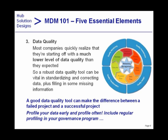Data quality is another essential element. People often start by thinking their data is pretty good — 80% quality or better — but when they start profiling and analysis, quality levels often drop. A robust data quality tool is vital for standardizing and correcting data. It can make the difference between a failed and a successful project. Yet I still see people trying to do MDM without a good data quality tool — using one built into the hub that isn't very good, writing SQL programs themselves, or skipping it altogether. Use a good third-party data quality program and make sure profiling is thorough.